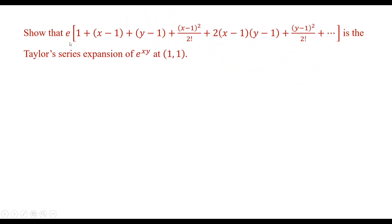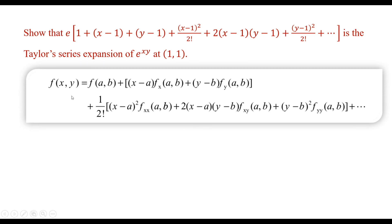Example 2: Show that e·[1 + (x−1) + (y−1) + second-order terms + …] is the Taylor series expansion of the function f(x, y) = e^(xy) at the point (1, 1). This is a function of two variables x and y, with the point (a, b) = (1, 1). We know the Taylor series expansion about the point (a, b).